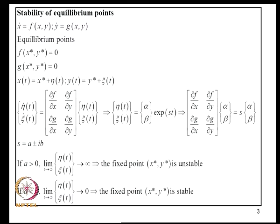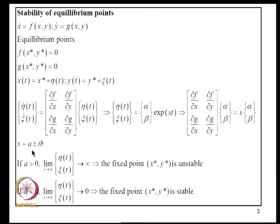We are interested in studying the stability of motion in the neighborhood of fixed points. If X* and Y* are the fixed points where F and G are zero, the fixed points are obtained by solving the equations X-dot = F and Y-dot = G(X,Y). If we perturb the motion in the neighborhood of these fixed points, the perturbations evolve according to the Jacobian matrix. If the real part of the eigenvalue A is greater than zero, motions grow in time and the fixed point is unstable; if negative, the fixed point is stable.